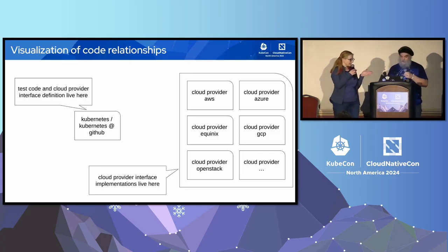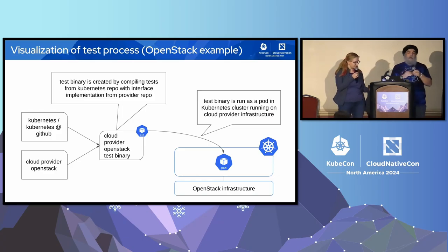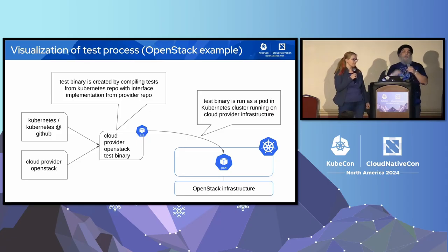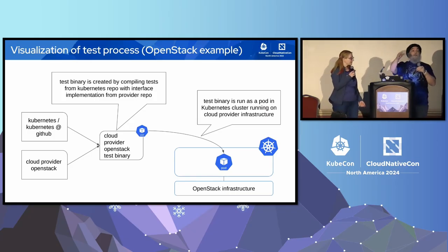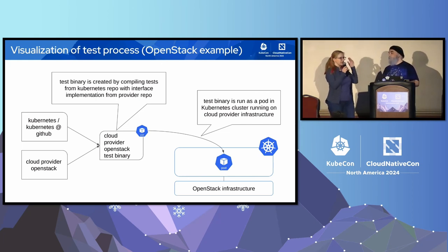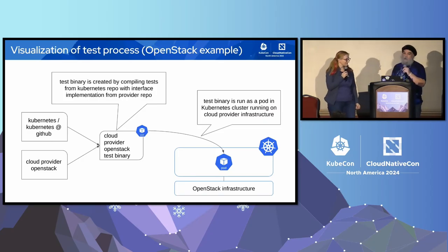How does this actually become a test? Using OpenStack as an example: you see the Kubernetes repo and the cloud provider OpenStack repo. The tests are compiled from the cloud provider OpenStack repo with a dependency on the main Kubernetes repo — so Kubernetes does not depend on the external cloud provider, it's the other way around. It's not submodules; it's a pure dependency. Through a compilation process, you end up with a binary containing the tests for that specific cloud controller.